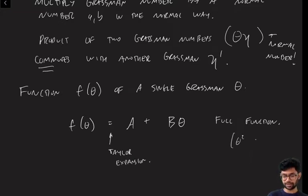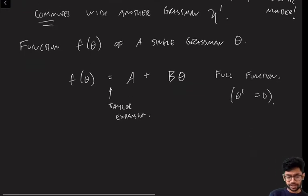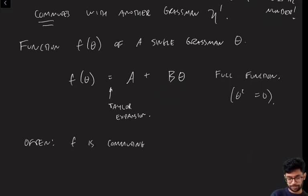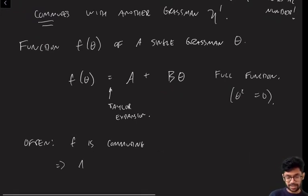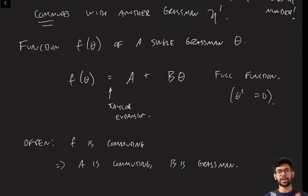A brief aside: in writing f(θ) = a + bθ, I have not specified whether a and b are normal numbers or Grassmann numbers. We are often interested in the case where f is a commuting function and θ is anti-commuting. You can see this implies that a is commuting and b is Grassmann. Most of what I'll say works regardless of what a and b are, but I'll be explicit when it matters.